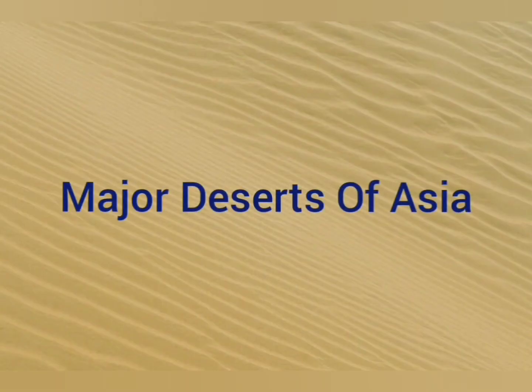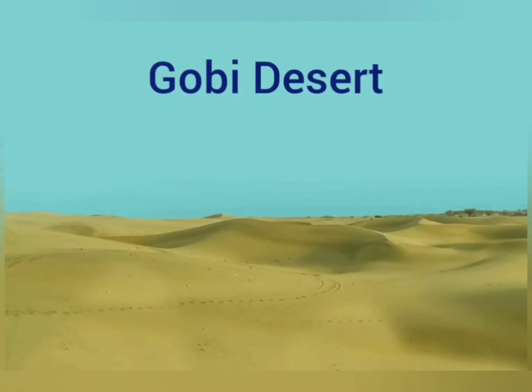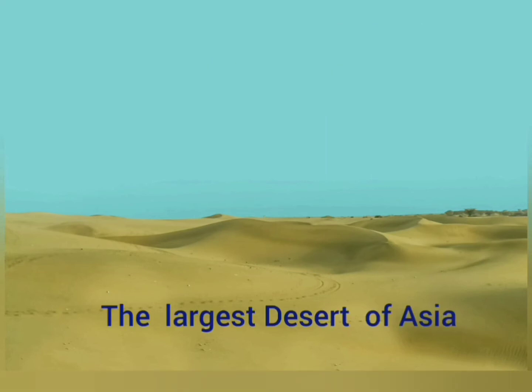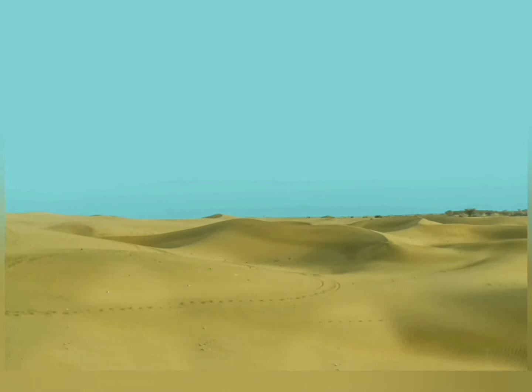Major Deserts of Asia. Gobi Desert — This is the largest desert of Asia. It covers parts of northern and northeastern China and of southern Mongolia. It occupies 5 lakh square miles.